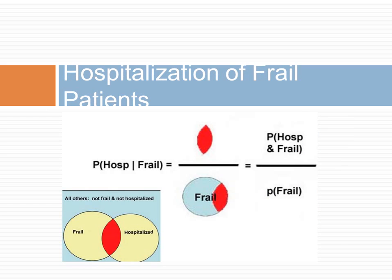In this example, we see how the conditional probability of hospitalization in a frail patient is calculated from the probability of each event. The probability of hospitalization given that the patient is frail is the ratio of the probability of the joint events, shown as red, divided by the probability of being frail. This example shows how the universe of possibilities shrinks to only frail elderly, and among these, we look for the percent of patients who have been hospitalized.